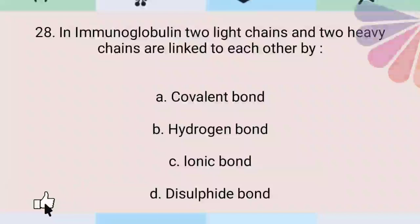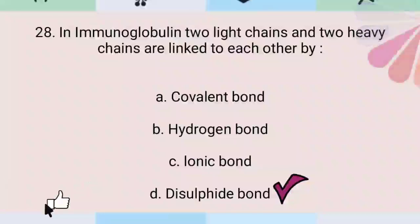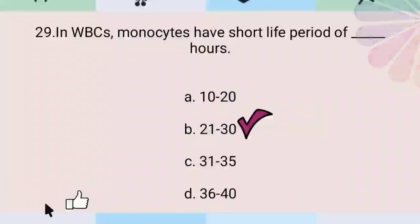In immunoglobulin, two light chains and two heavy chains are linked to each other by a disulfide bond. In WBCs, monocytes have a short life period of 21 to 30 hours.